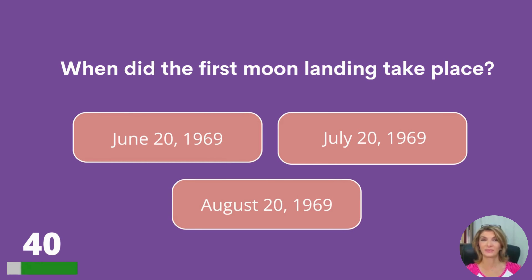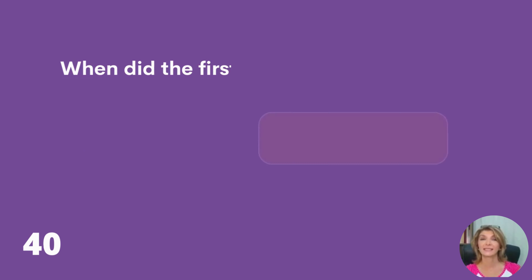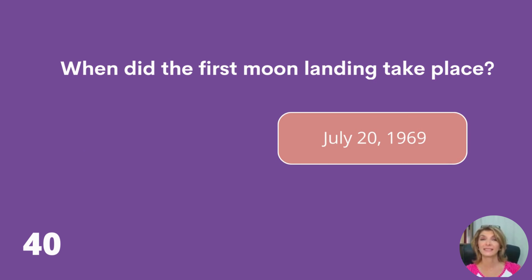When did the first moon landing take place: June 20th 1969, July 20th 1969, or August 20th 1969? July 20th, 1969.